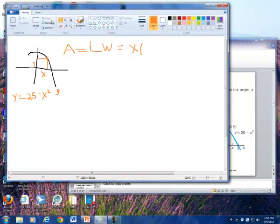So basically, we're looking at x, y. Well, y is the 25 minus x squared. So this will be x times the 25 minus x squared.